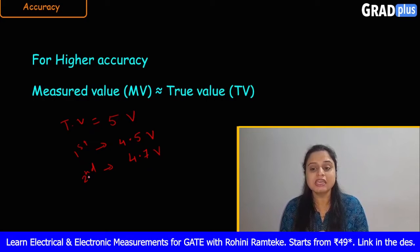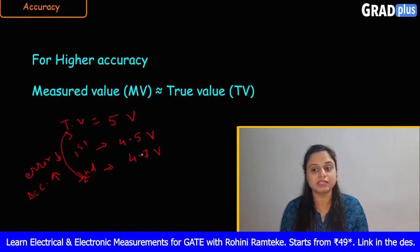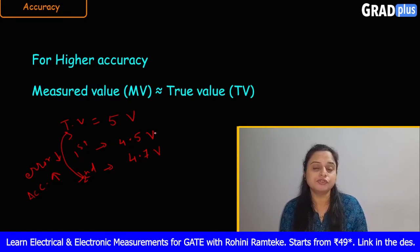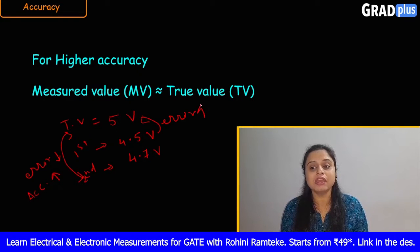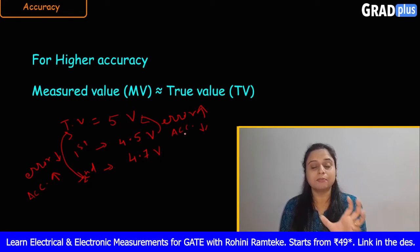From the readings, you can see that the second meter reading of 4.7 volts is more nearly equal to the true value of 5 volts. That means the error will be less for the second meter, so its accuracy will be greater. In the first meter the error is more, so the accuracy is automatically less. Therefore, the second meter is more accurate than the first.